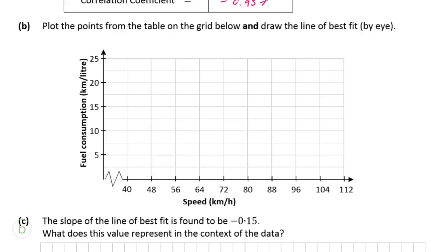So for part B, we're asked to find the graph, basically. We've got to plot the points and draw the line of best fit by eye, so it doesn't have to be perfect. And this is pretty much easy enough.